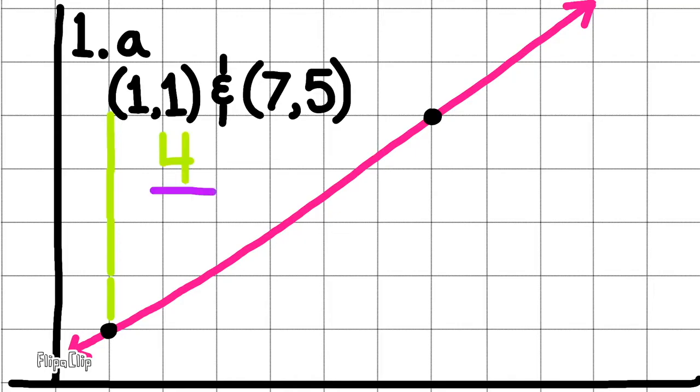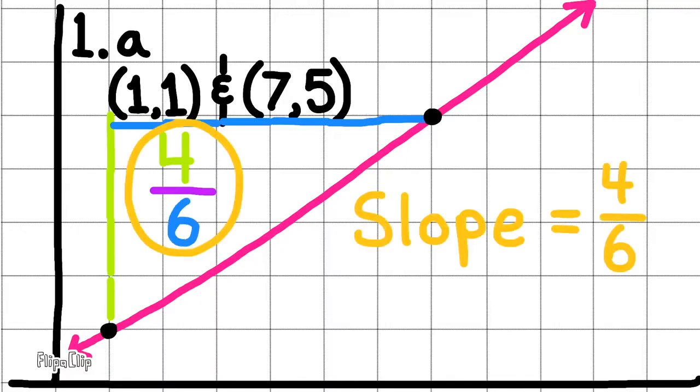A. Points (1,1) and (7,5). The difference in the y values is 5 minus 1, and that's 4. And the difference in the x values is 7 minus 1, and that's 6. So the slope is 4 over 6.